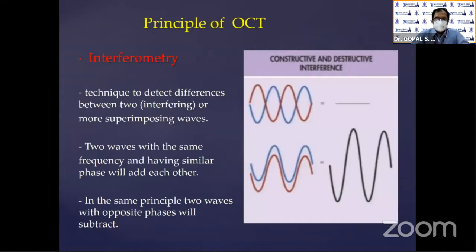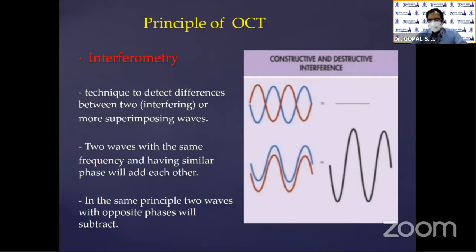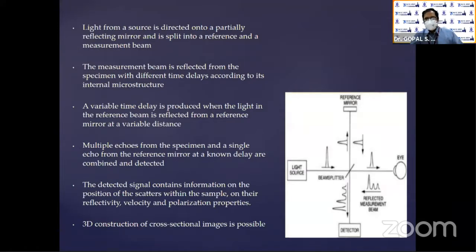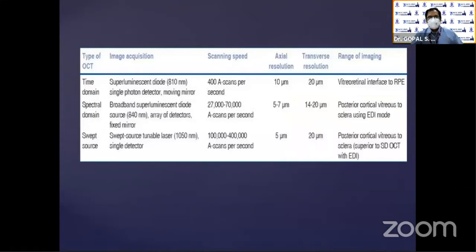It works on the basic principle called interferometry, where two waves of the same frequency and similar phases will add to each other, and in opposite phases will subtract. Basically, light from the source is directed to a reflecting mirror, and then the reflections and the differences in interferometry are taken as the image.